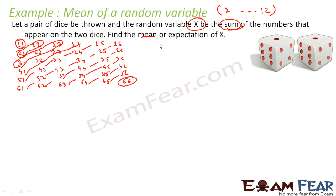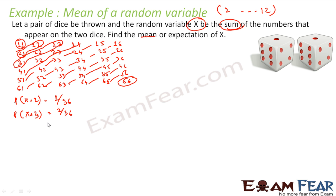For sum equal to 2, there is only 1 combination out of 36, so probability of x=2 is 1/36. Probability of x=3: there are 2 numbers whose sum is 3, so 2/36. Probability of x=4: there are 3 numbers whose sum is 4, so 3/36.